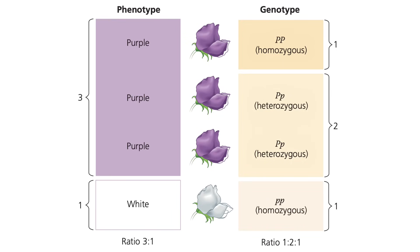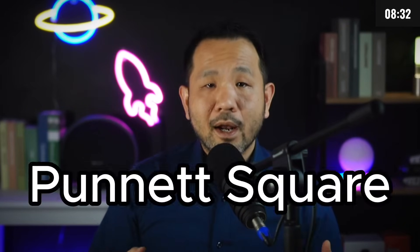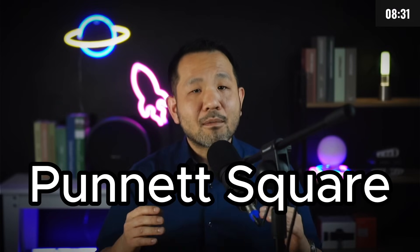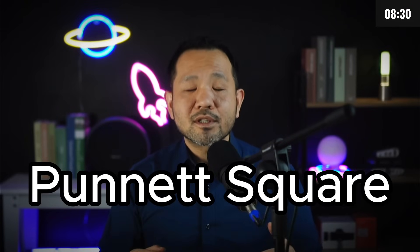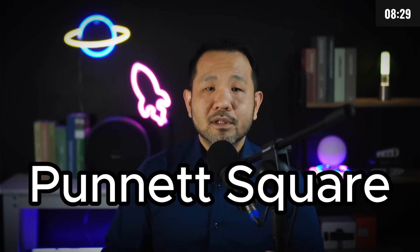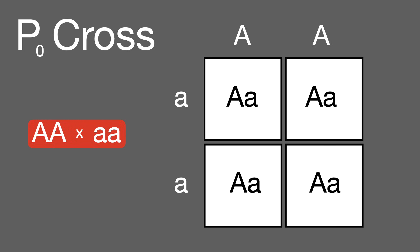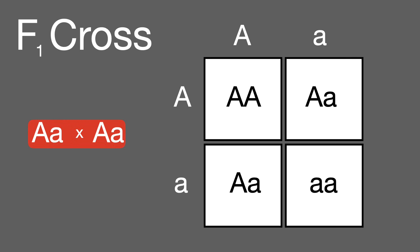How do we predict the outcomes of crosses between multiple plants? Well, we use the Punnett square. Let's go through some of the major crosses and their outcomes: the P cross producing the F1 generation, and the F1 cross or monohybrid cross producing our F2 generation.